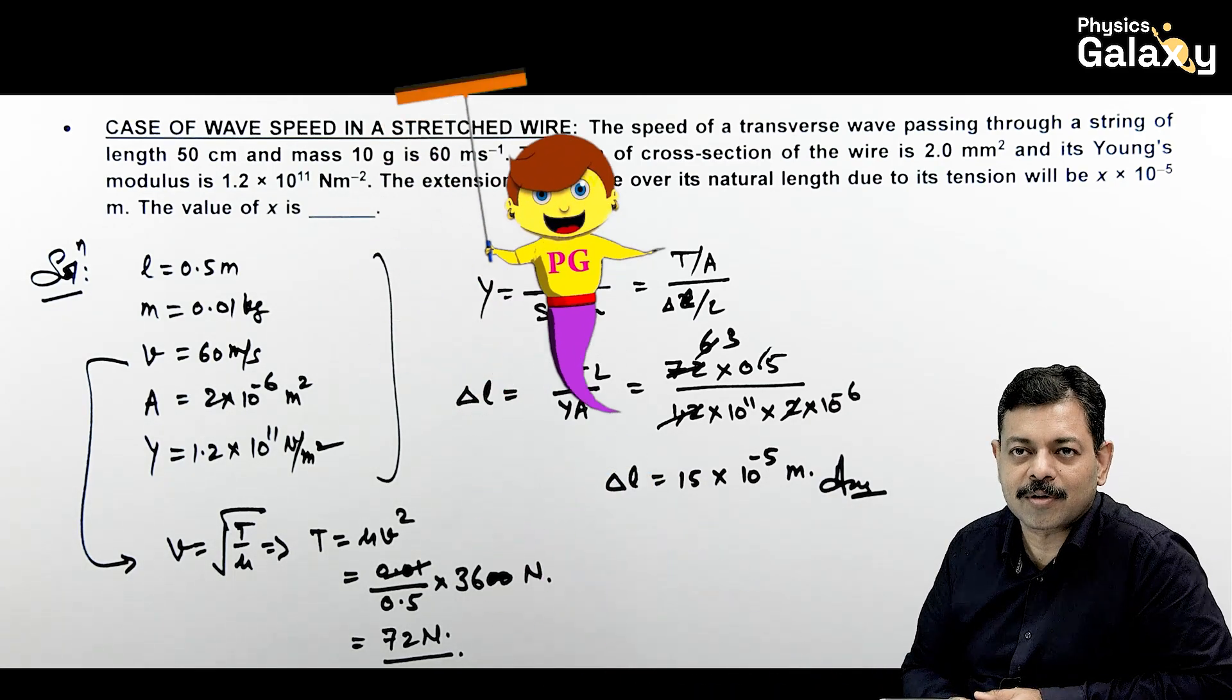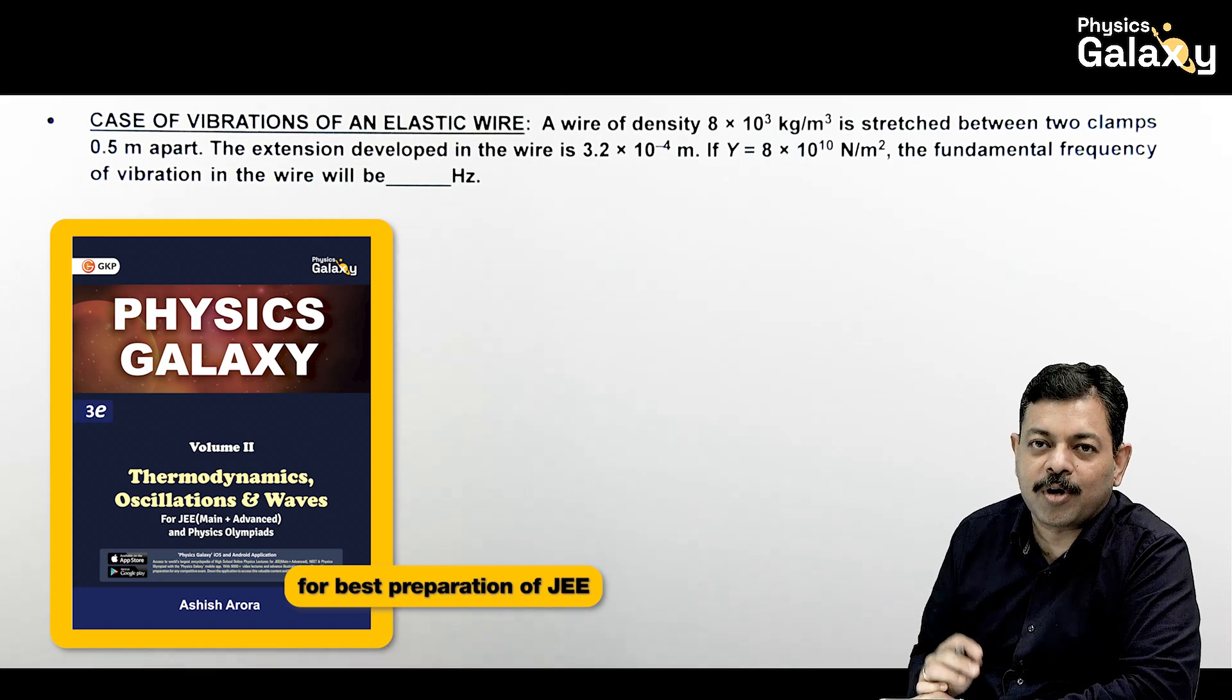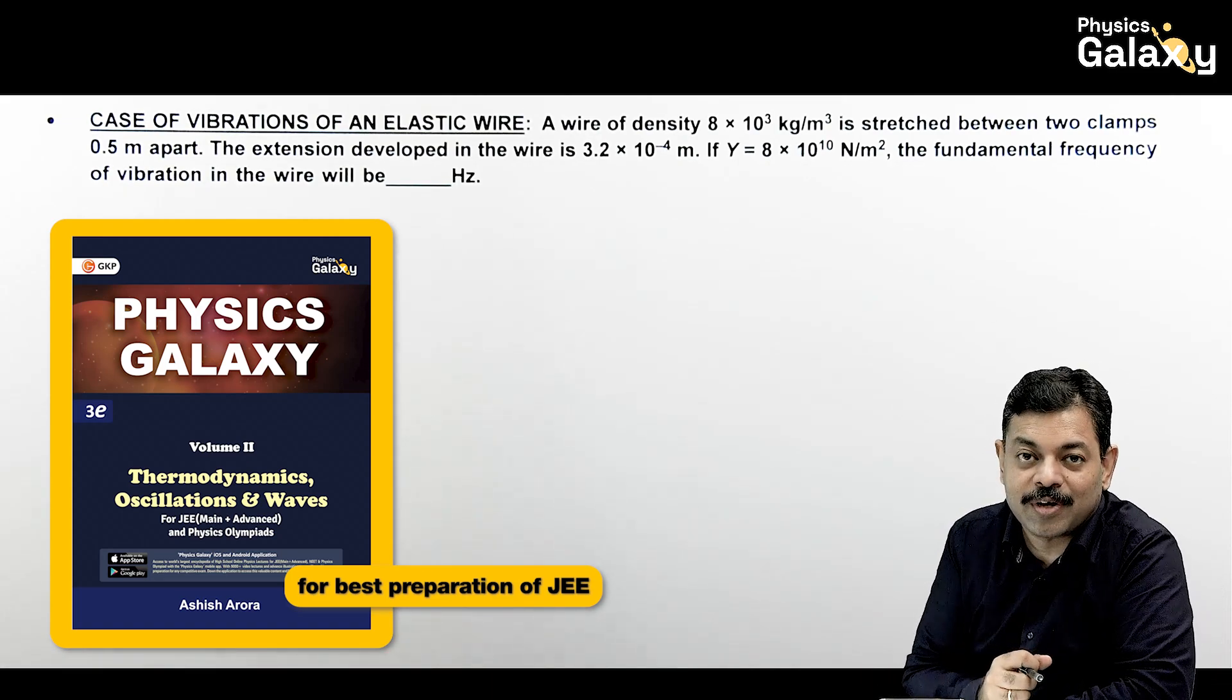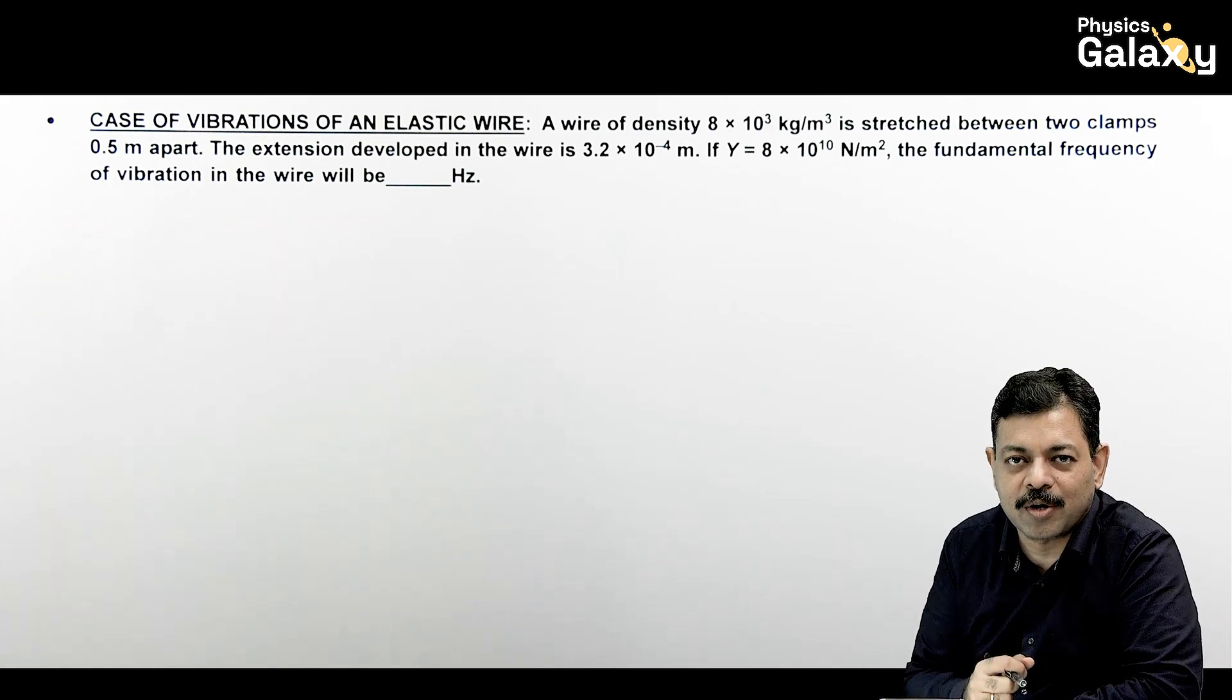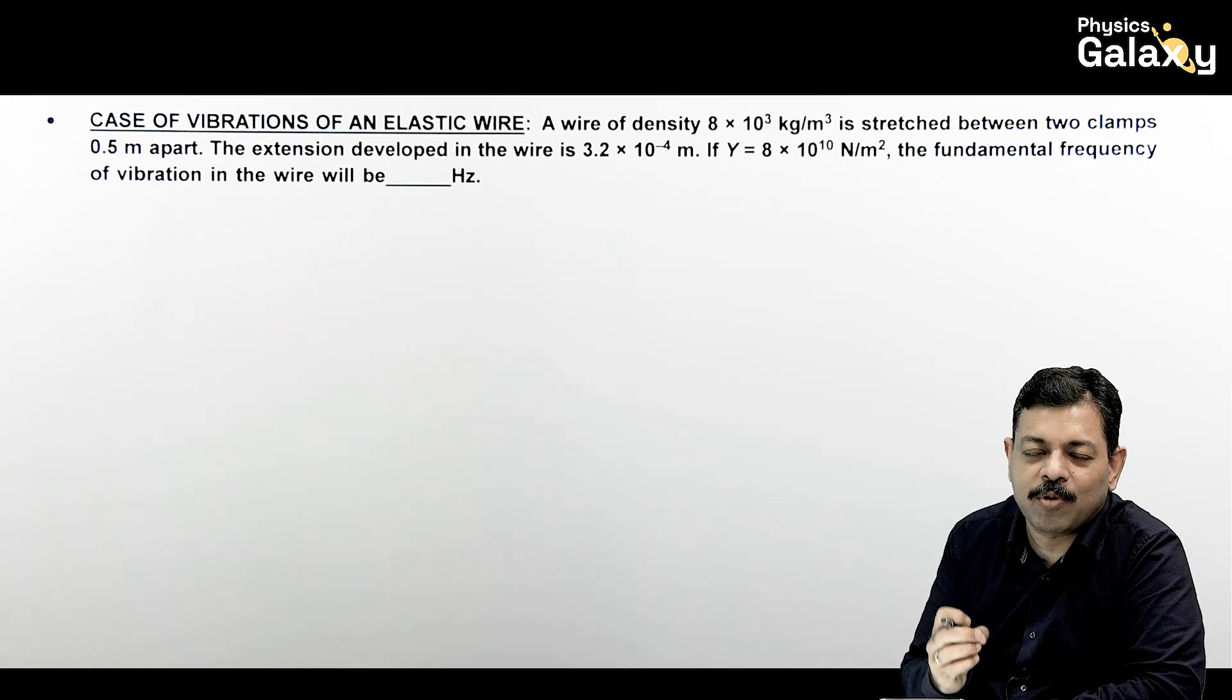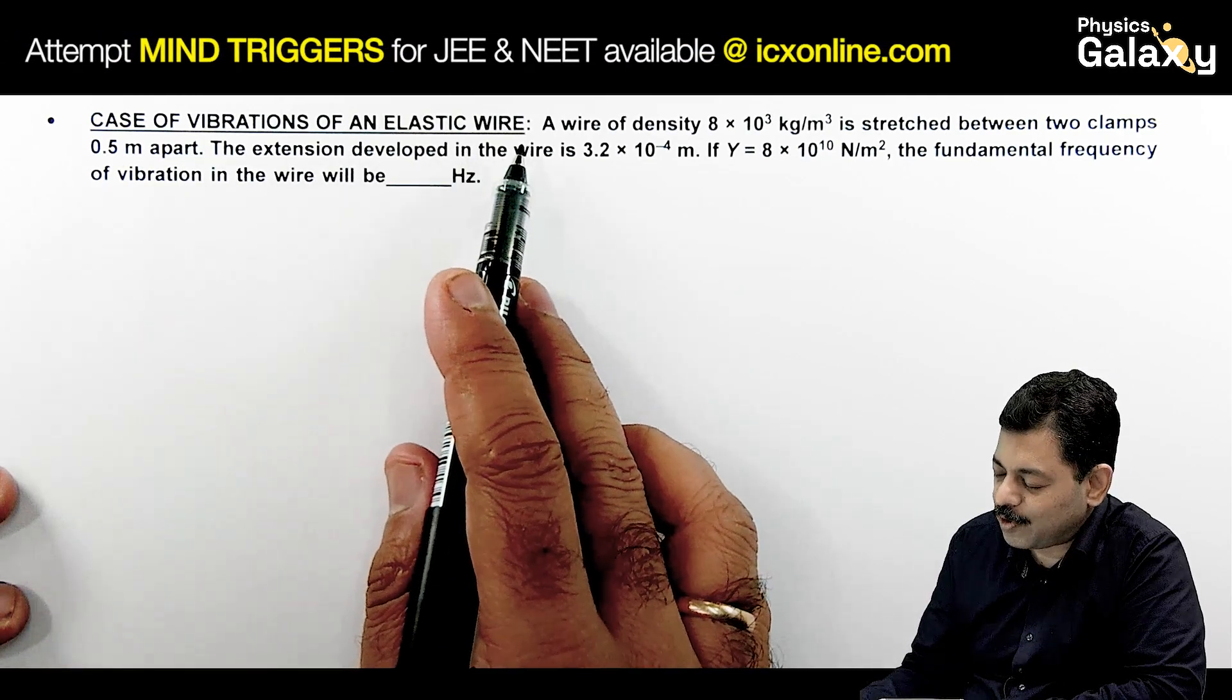Thank you. So let us talk about some cases of clamped wire oscillation or resonance ke cases. The simple wave ke cases, we have seen quite a lot. Now we will start working upon the cases of clamped oscillation and resonance tube. Here, a case of vibration on an elastic wire we need to check.